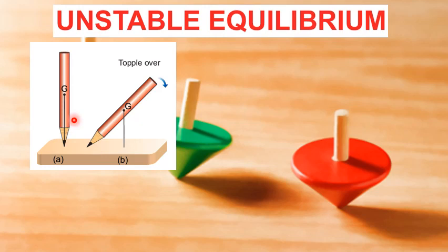This is called Unstable Equilibrium. In unstable equilibrium, a body may be made to stay only for a moment. Thus, a body is unable to keep itself in the state of unstable equilibrium.